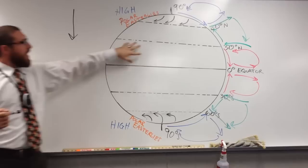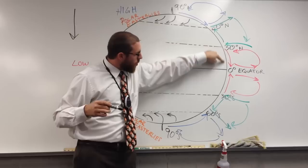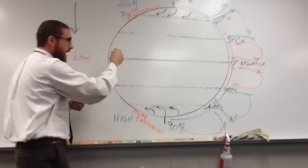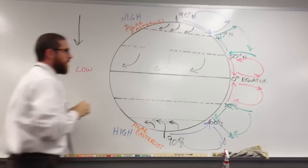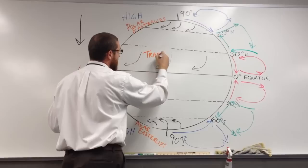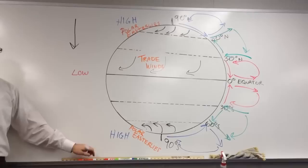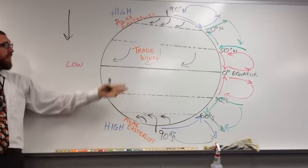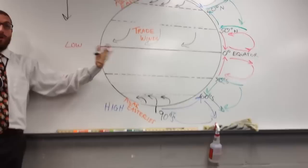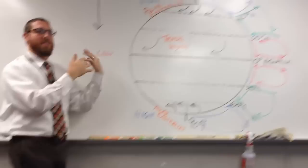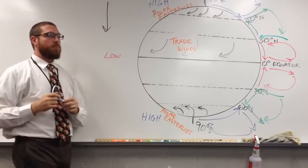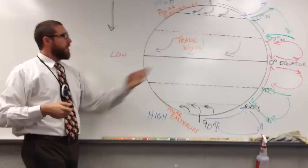From the equator to about 30 degrees north, we have winds blowing towards the equator — blowing south. Winds that blow down turn to the right, so they end up moving this way. These get the name trade winds. Trade winds were really important for trade when they used sailing ships — very helpful for sailors in Europe to get to South America and the West Indies, like the Bahamas and Cuba. They come from the east and go to the west, so they're an easterly wind.